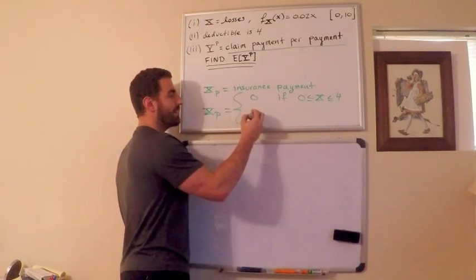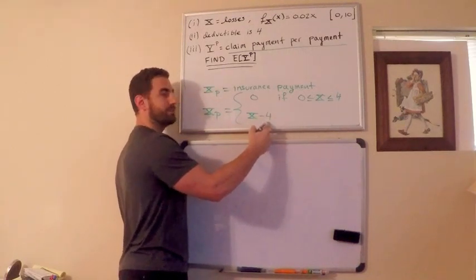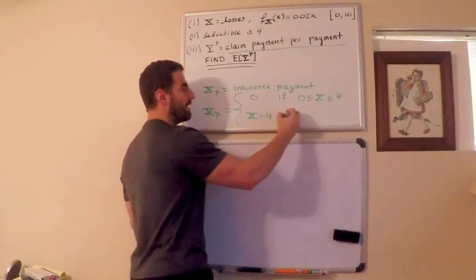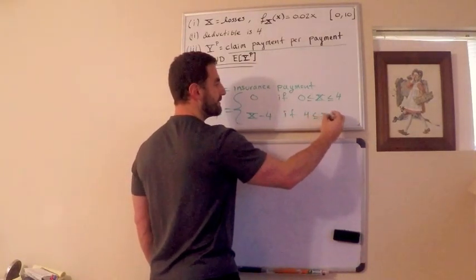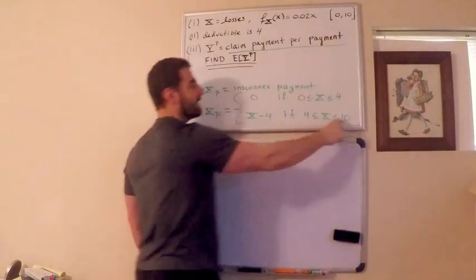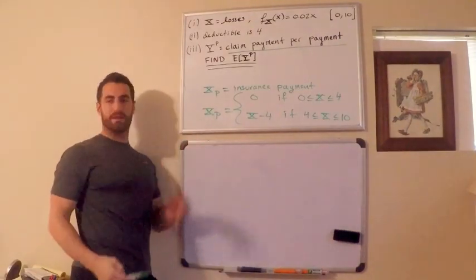Otherwise, I'm going to pay whatever the loss is minus what you pay, which is the deductible. If I'm the insurance company, I'm going to pay the loss minus the deductible if the loss exceeds the deductible but is less than the maximum loss, which is 10. This is the insurance payment here.